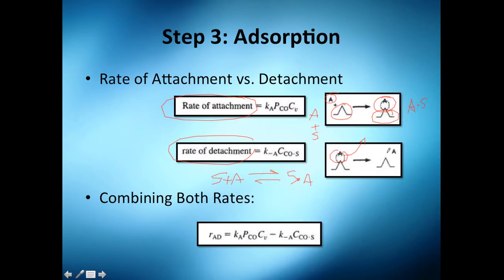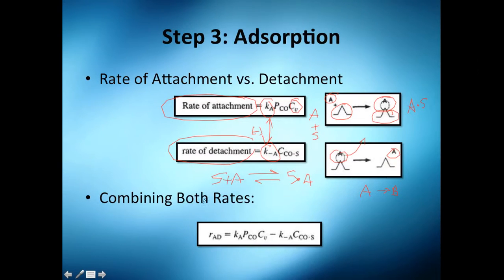We have an equilibrium of attachments, so we need to account for that. Even though you want to react A to form B, we still need to account for it. The forward term includes the partial pressure of CO times the concentration of vacant sites, and the reverse term has a negative constant with the same magnitude but opposite sign.